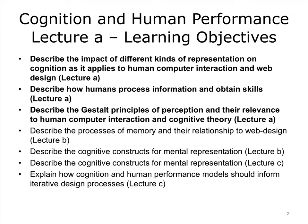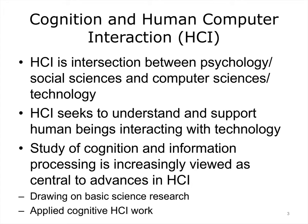The unit objectives for this lesson are: describe the impact of different kinds of representation on cognition as it applies to human-computer interaction and web design; describe how humans process information and obtain skills; and describe the Gestalt principles of perception and their relevance to human-computer interaction and cognitive theory.